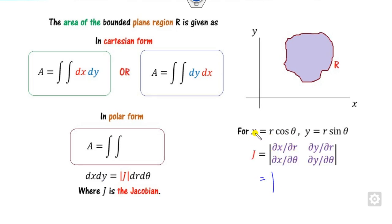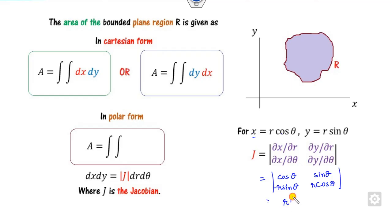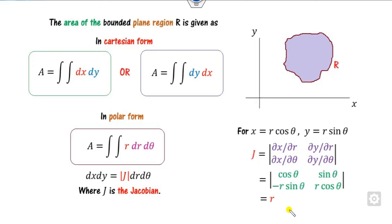The Jacobian is found by computing the partial derivative of x with respect to r, which is cos θ, and with respect to θ, which is -r sin θ. Similarly for y. The determinant gives r cos²θ + r sin²θ = r. So J = r, and therefore dx dy is replaced by r dr dθ. This is the formula for polar coordinates, and the standard formula applies for Cartesian.